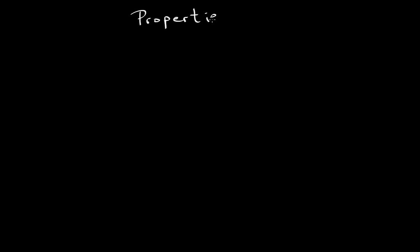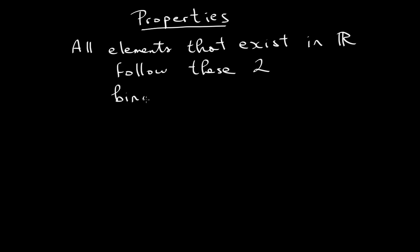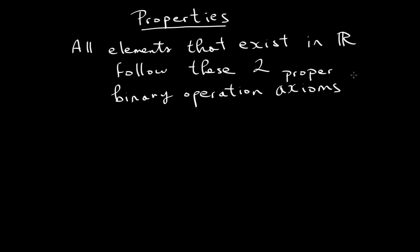In this introductory video, I also want to cover properties. We work in things called fields — the reals are a field, the rationals are a field. In order to be a number system, you need rules. Axioms is a more mathematical way of saying properties, so anytime you read 'axioms,' translate that to properties.